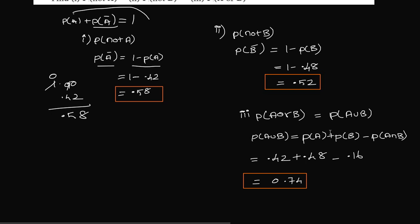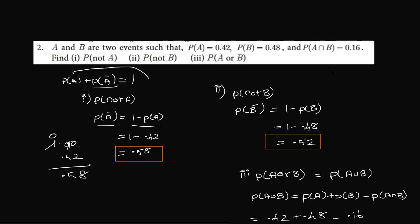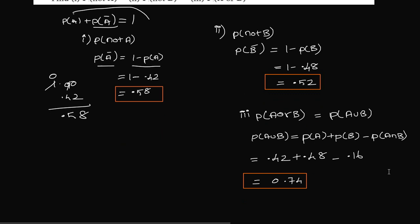P(A) in the question, P(B) in the question, P(A intersection B) in the question. All values substitute. So first, add 0.42 plus 0.48. 4 plus 4 is 8, plus 8 is 9, so 0.90. Then 0.90 minus 0.16 is 0.74.